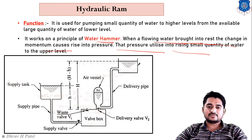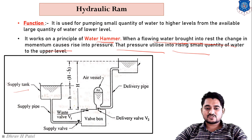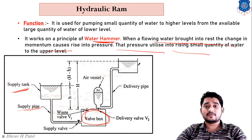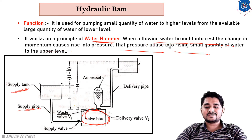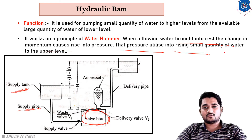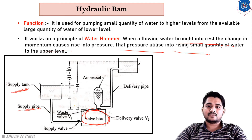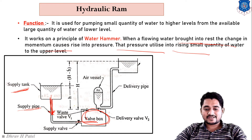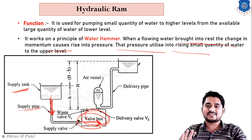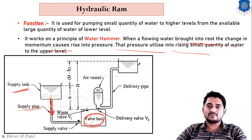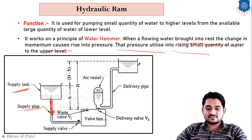In the working of the hydraulic ram, water is supplied through the supply pipe to the valve box. It works on the water hammer principle. When flowing water is brought to rest, the change in momentum causes a rise in pressure, and this pressure rise is utilized to raise a small amount of water to the upper level. Water is impacted in the valve box through a hammering process, and the momentum of water is converted into pressure.